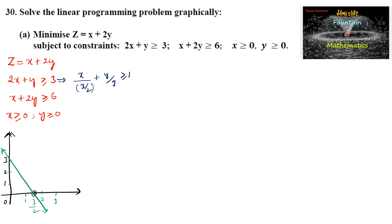Since the origin does not satisfy the first inequality — 2(0) + 0 = 0 is not ≥ 3, which is false — the shaded region is away from the origin, on the other side within the first quadrant.